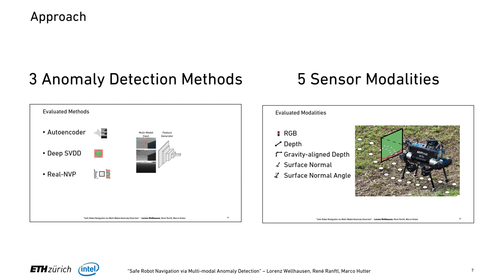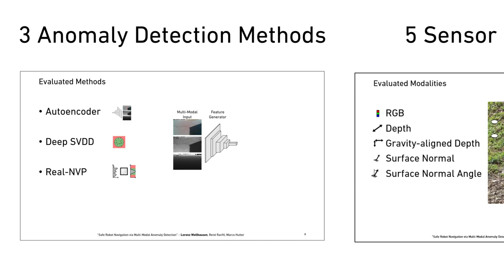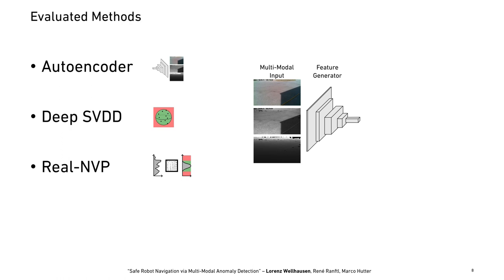We evaluated various anomaly detection methods and sensor modalities. All methods use a convolutional architecture so that even though we train on patches, we can afterwards deploy them densely on larger input images in an efficient way. All three methods share the same architecture for a feature generator, which takes multimodal input — the stacked channels of sensor modalities — and generates features from that.